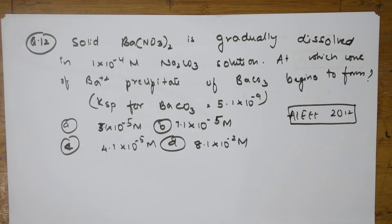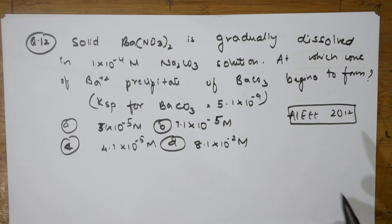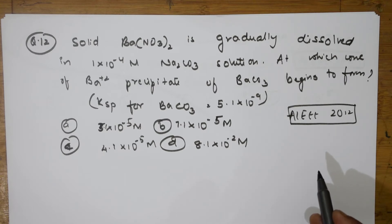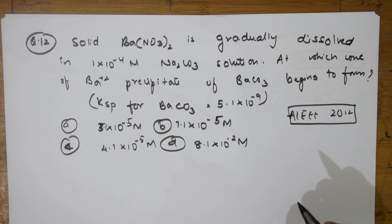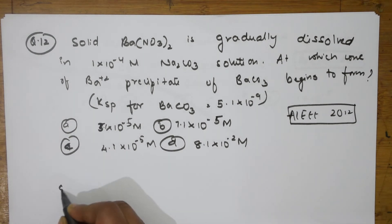Now the 12th question: solid barium nitrate is gradually dissolving in a 1 × 10⁻⁴ molar sodium carbonate solution. At what concentration does barium precipitate — barium carbonate — begin to form? The Ksp of barium carbonate is given as 5.1 × 10⁻⁹. I need to find at which concentration of Ba²⁺ precipitation begins.